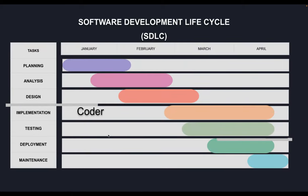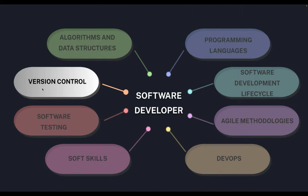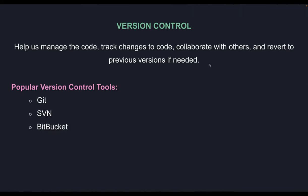Version control allows you to manage your code and track changes. You can revert to a previous commit or version, and review code before merging. The more effective you are with version control tools, the faster and more confident you'll be — you won't worry about merging your code. Understanding version control makes you more effective and faster throughout the software development life cycle.